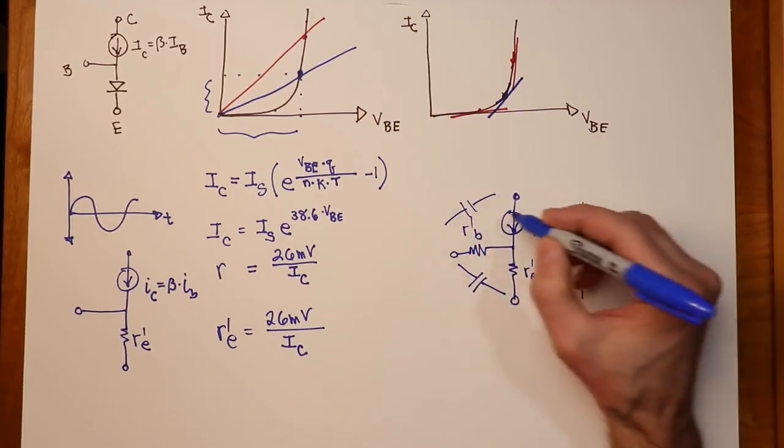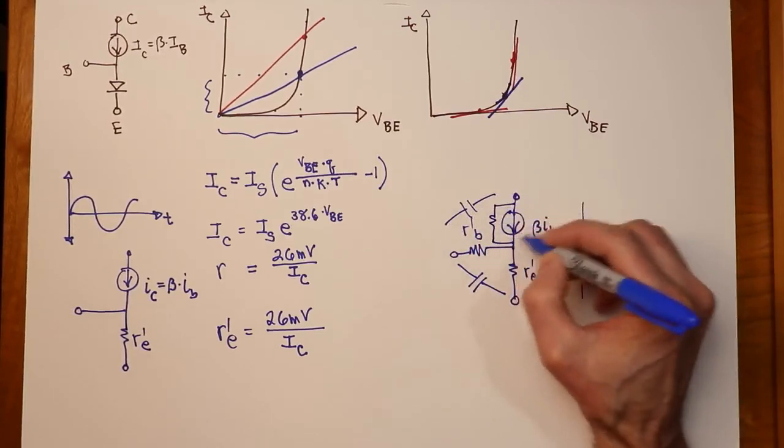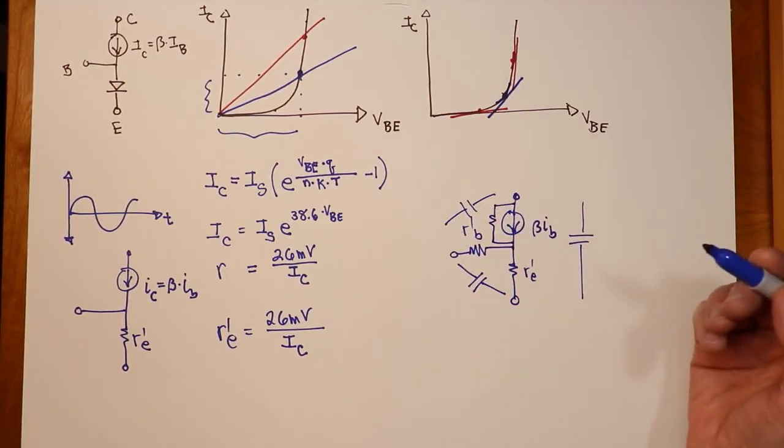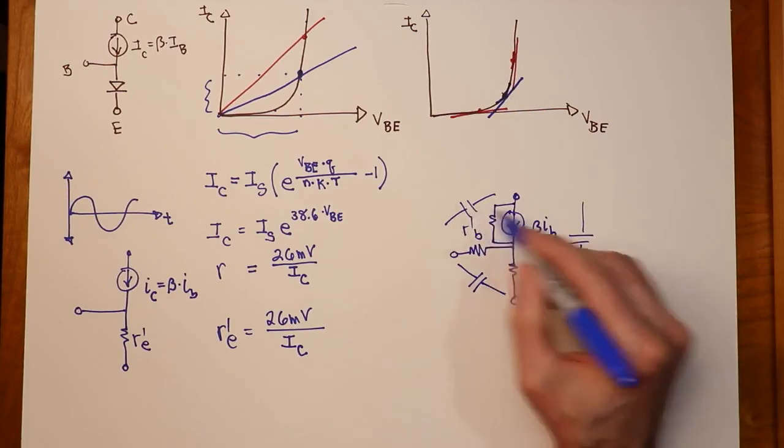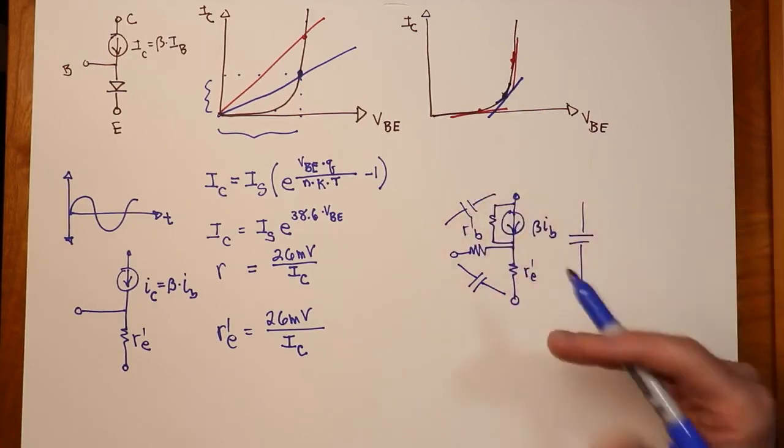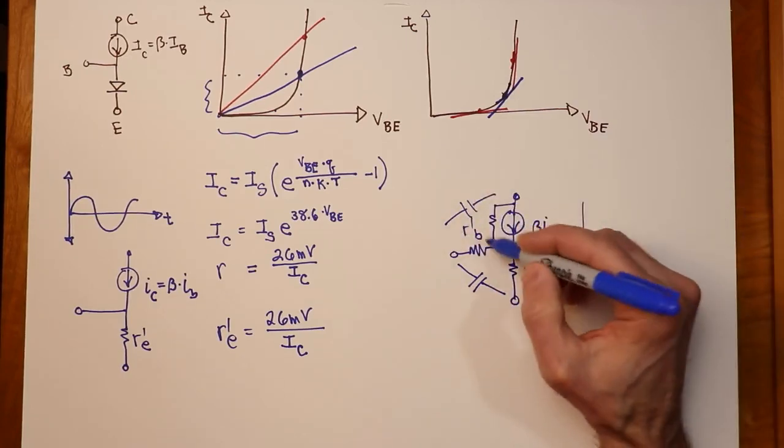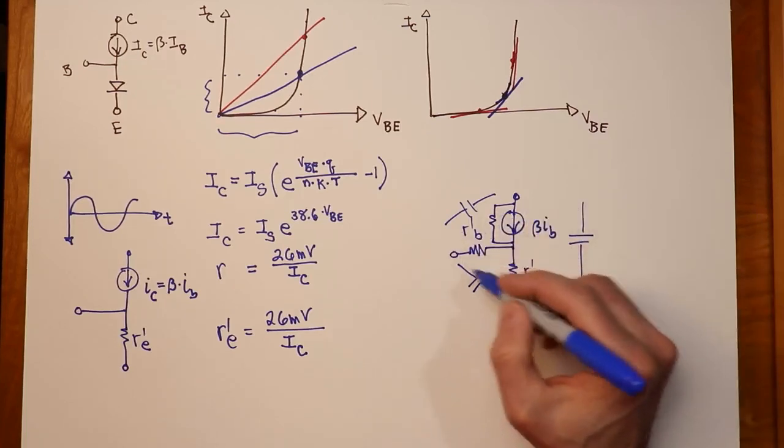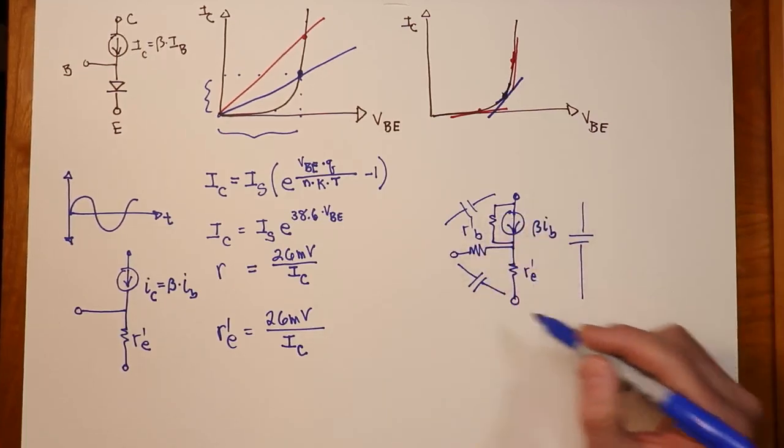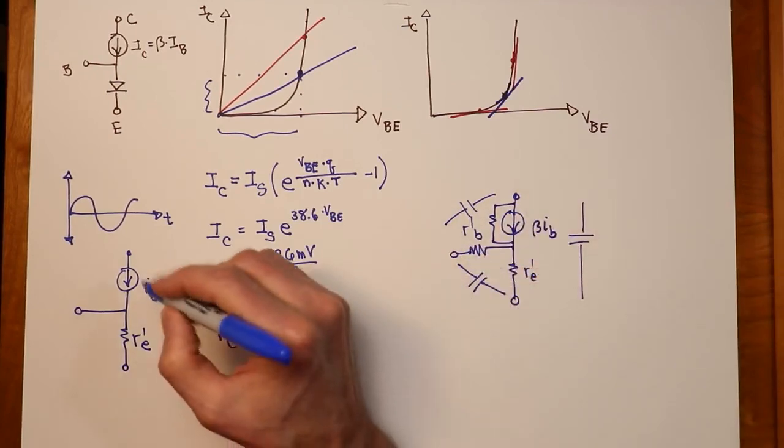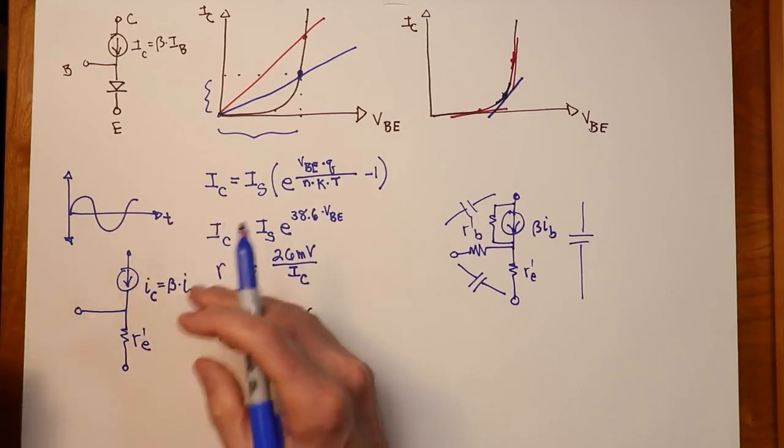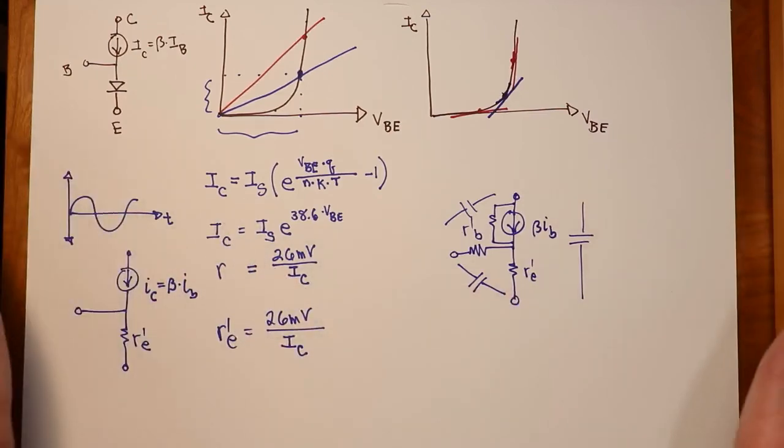There's also a resistance associated with the current source, just like there would be in the DC case. So the point being here is that these capacitance values are small enough to ignore. The internal resistance here is large enough to ignore, and the R prime B is small enough to ignore. So we compare this down to just this. Okay, so we have a current source, we have an R prime E, and we'll pick it up next time.